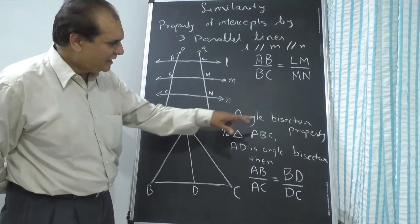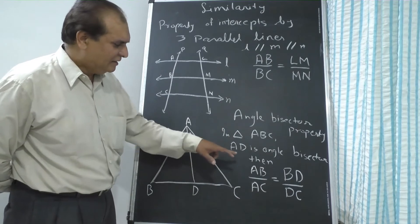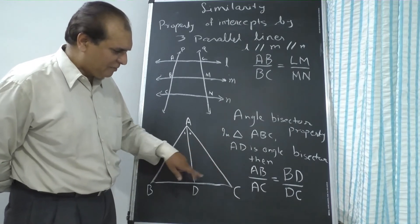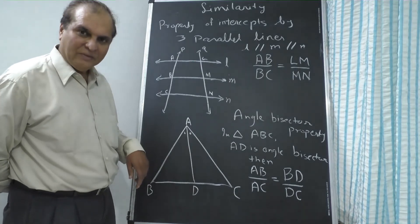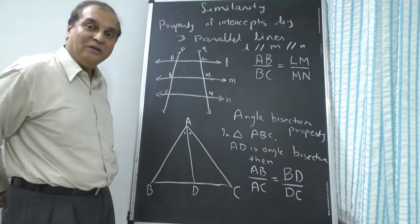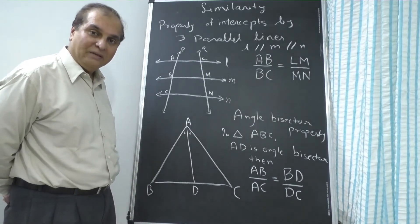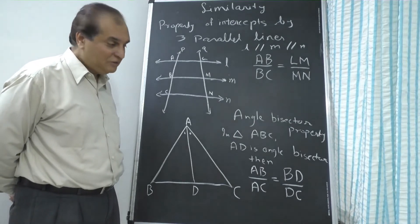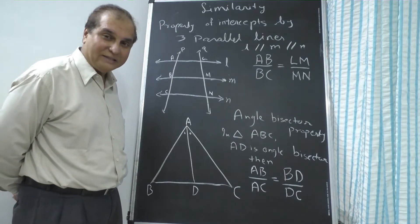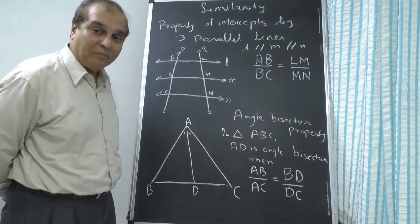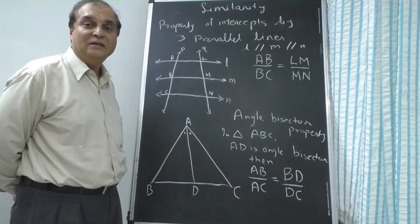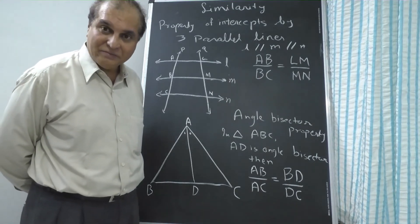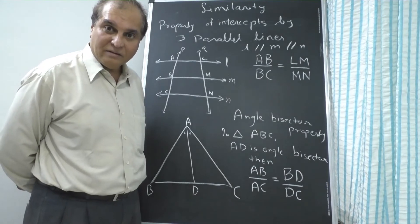In triangle ABC, if AD is the angle bisector — it divides the angle into exactly two equal parts — then the angle bisector property gives: AB upon AC equals BD upon DC. This ratio you will find the same. This may be part of one big sum, but once you understand, you can write the steps with proper reasons. In geometry, you need to write proper reasons for each step.